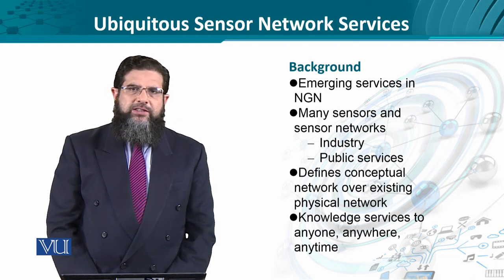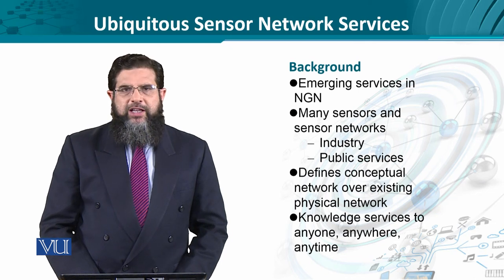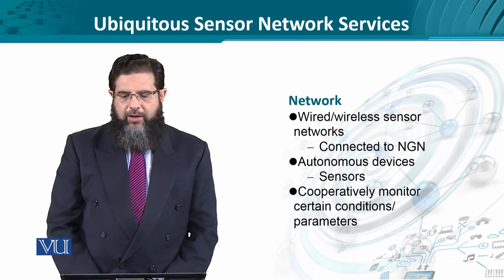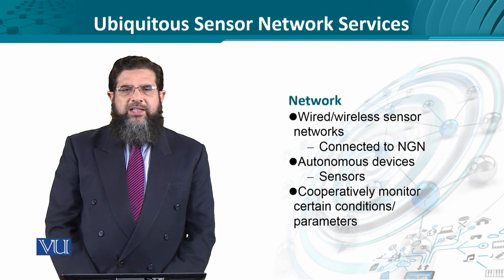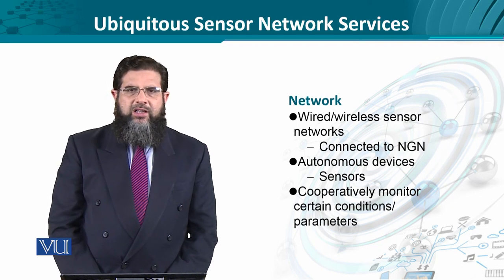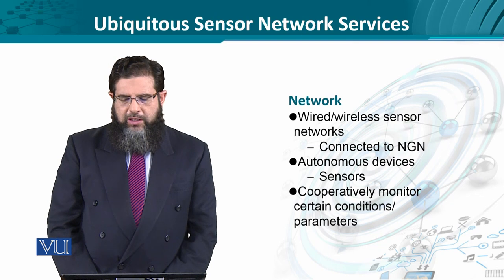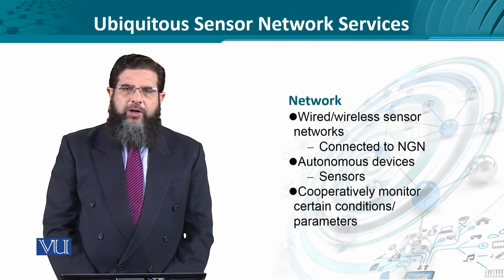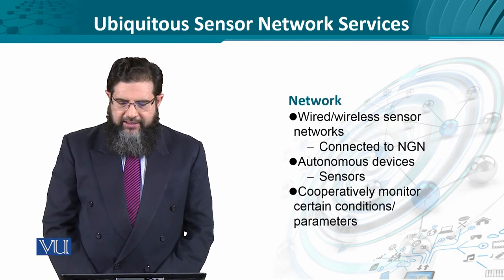USN services are also known as knowledge services because the journey from raw data to information to knowledge is the desired goal for inferring maximum purpose and usefulness from the real-world environment. The network is basically a wired-cum-wireless network, where sensors are connected to each other and to a centralized system known as the gateway and portal, which in turn is connected to the NGN. These services are fairly autonomous, as different service providers use their own mechanisms, devices, and gadgets.